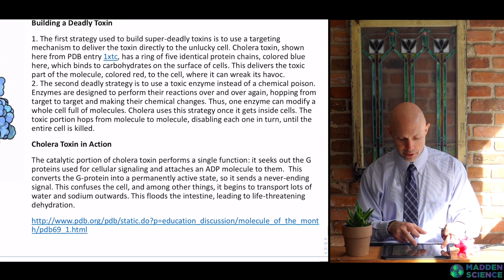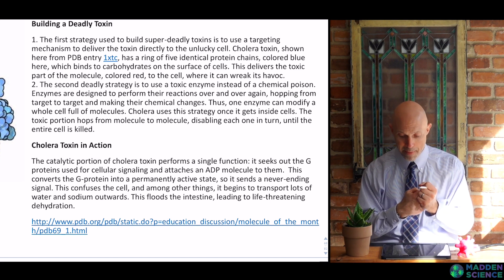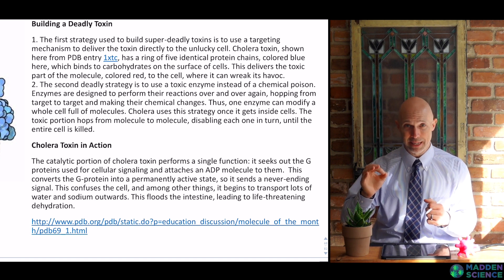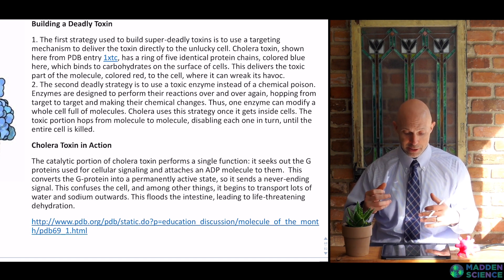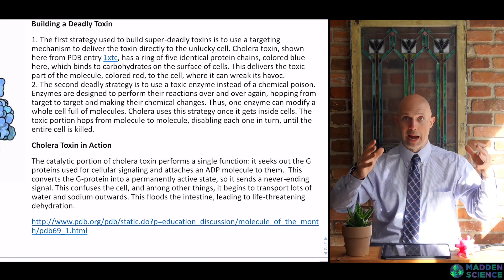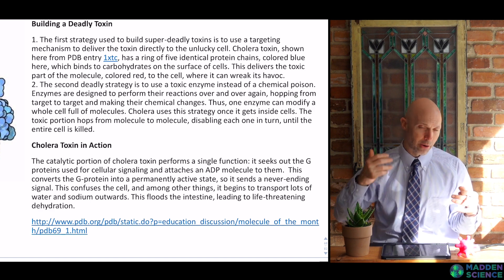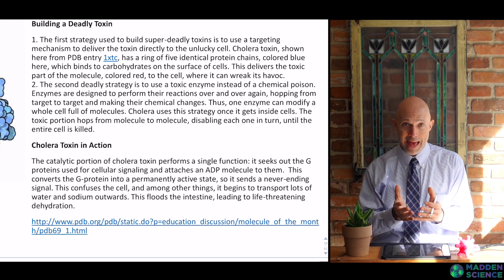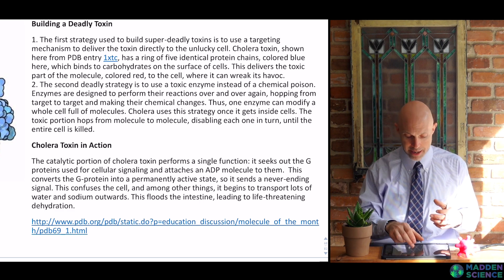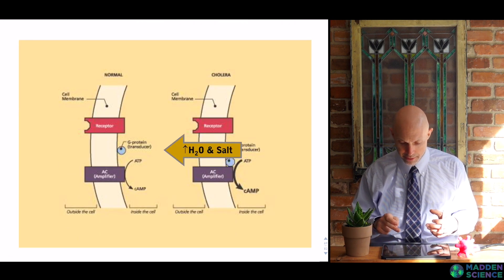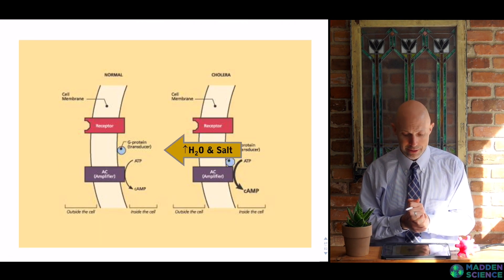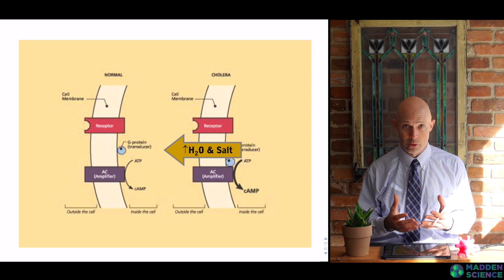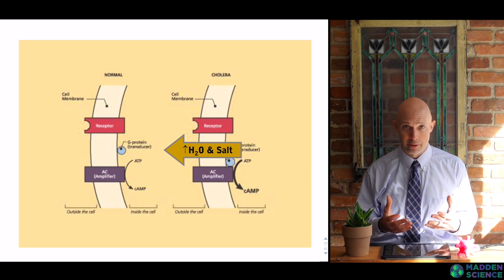Here's the cholera toxin in action. It's going to bind to a G protein used for cellular signaling and attach an ADP — adenosine diphosphate — onto it. This basically locks it in the on position, so it's signal, signal, signal, signal, which starts to transport water and sodium ions out and into the intestines. We can see the movement of water and salt into the intestines as opposed to being absorbed, leading to incredibly watery stool and diarrhea, dehydration, and oftentimes death.